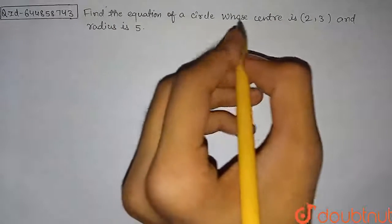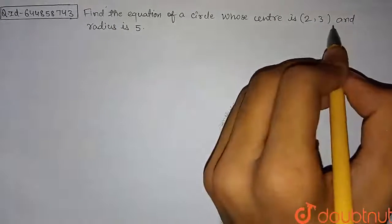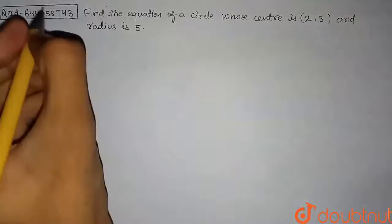Hello students, let's discuss the question: Find the equation of a circle whose center is (2,3) and radius is 5. So let's begin with the solution of this question.